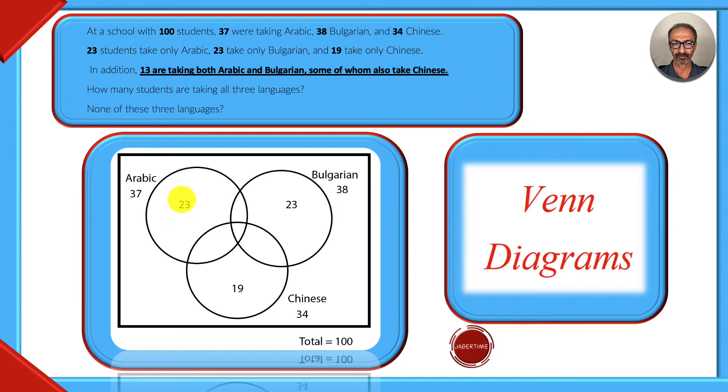23 students take only Arabic, 23 take only Bulgarian, and 19 take only Chinese. In addition, 13 are taking both Arabic and Bulgarian, some of whom also take Chinese. So some of the 13 are down right here taking all three languages.